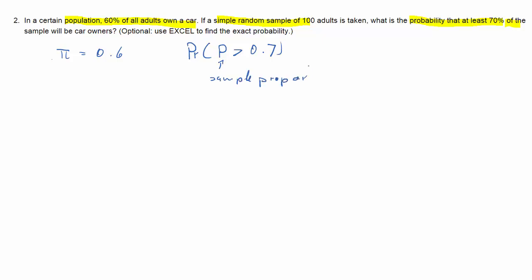So the true proportion or the true probability of a random owner being a car owner is 0.6, but what we want is the probability of P̂, that is the sample proportion, and therefore I'll use PR for probability, that that is larger than 0.7.